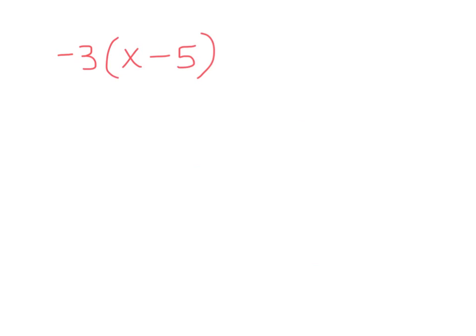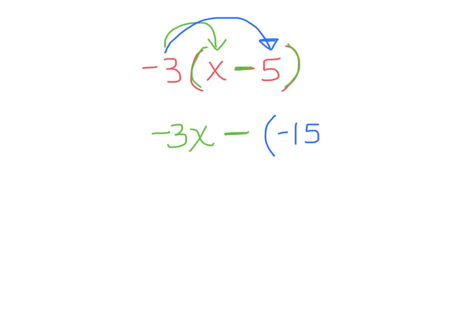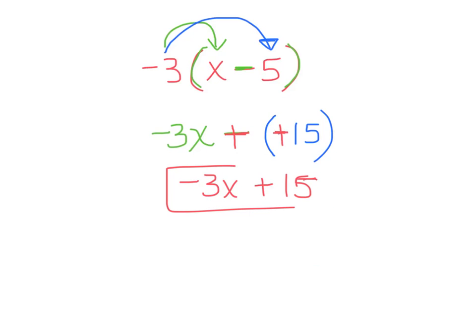Now we're going to try one with negative signs: negative 3 times (x minus 5). Same approach — multiply negative 3 by everything inside. Negative 3 times x is negative 3x. Keep the minus sign. Then negative 3 times 5 is negative 15. Now, since I don't like subtraction, I'm going to add the opposite. So a better way to write this is negative 3x plus 15.